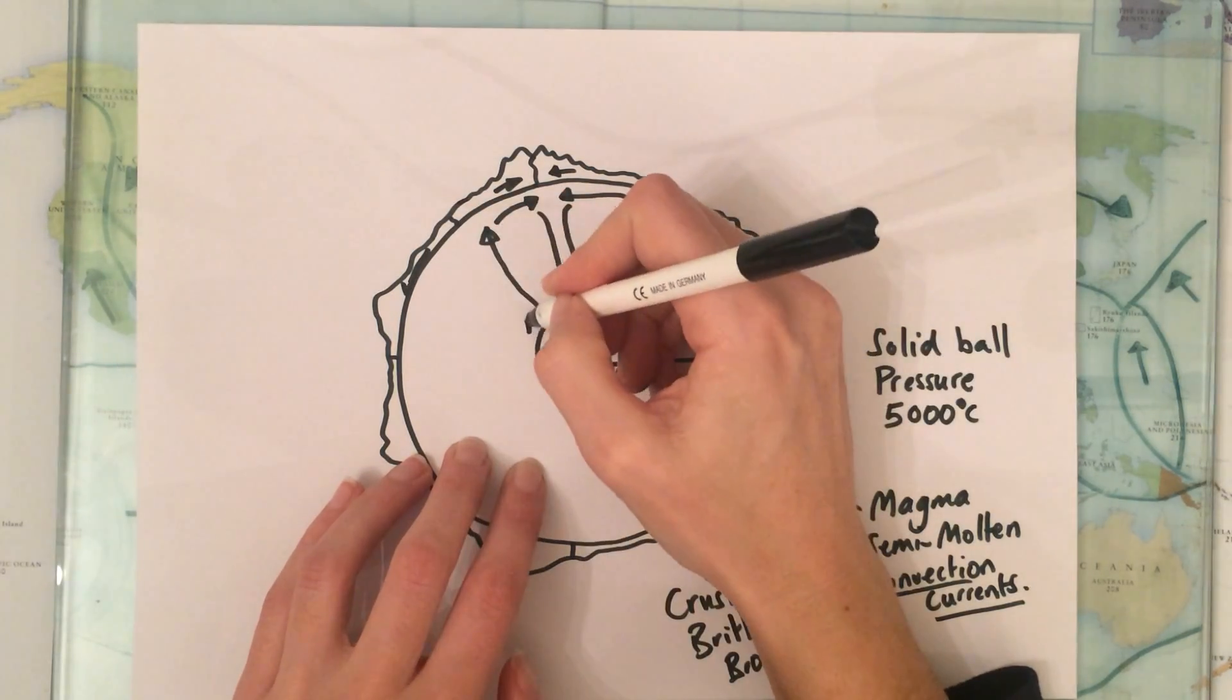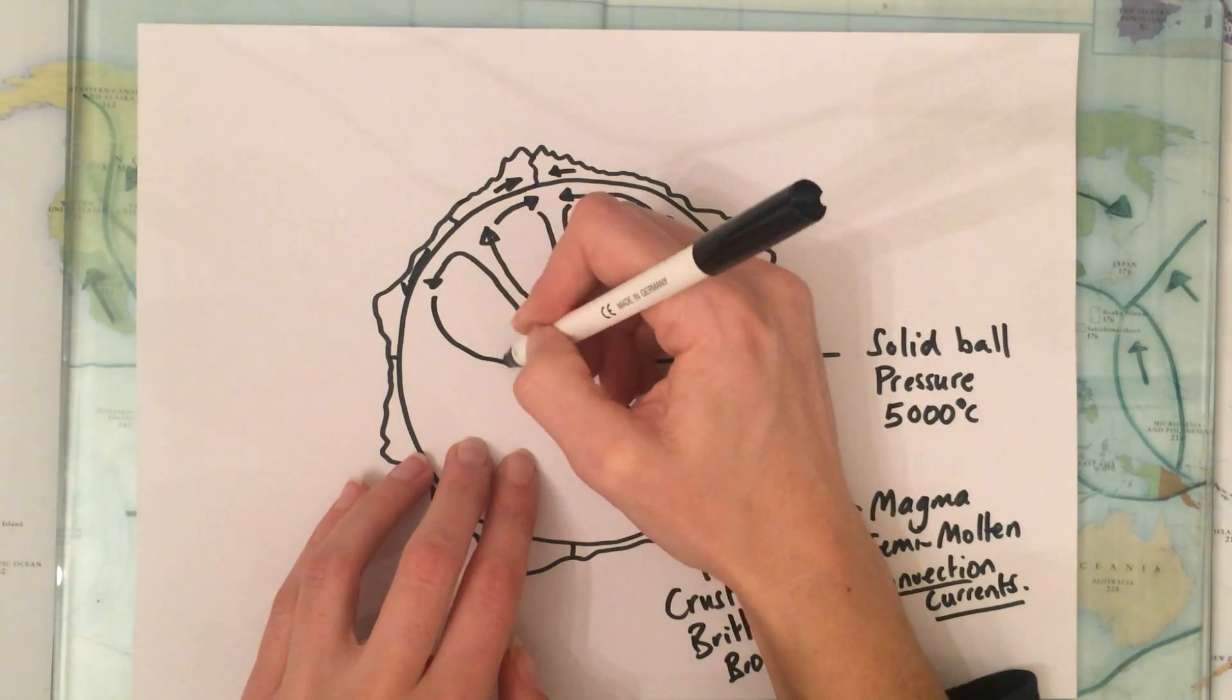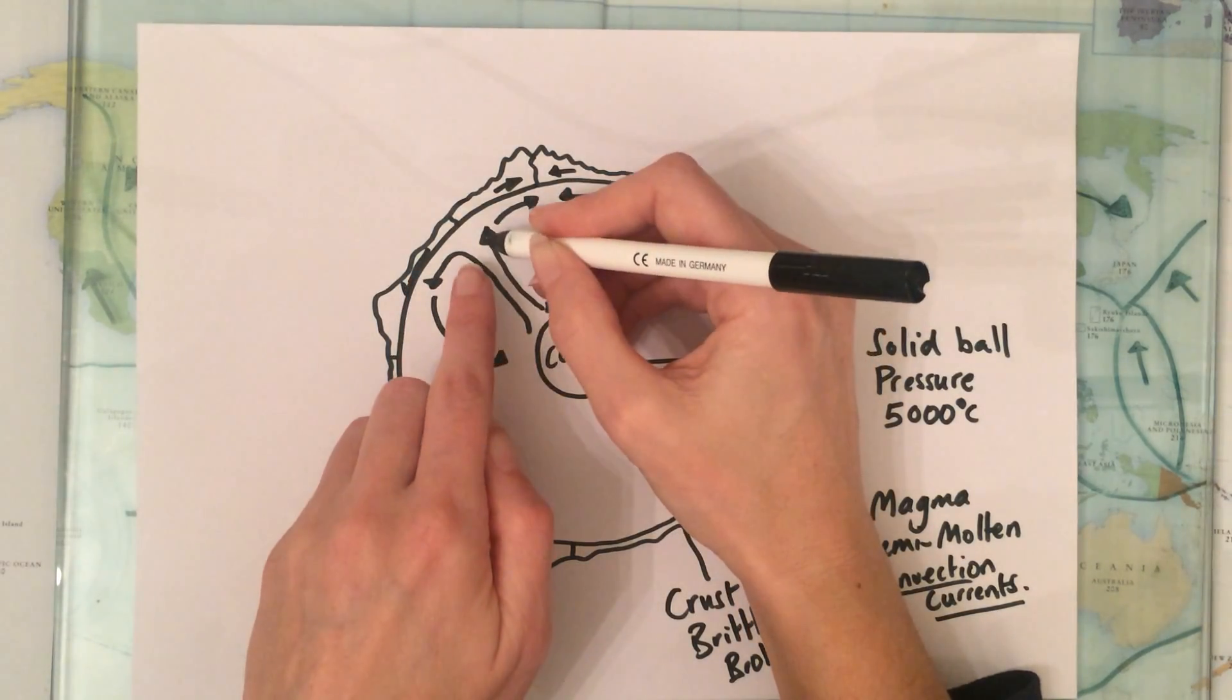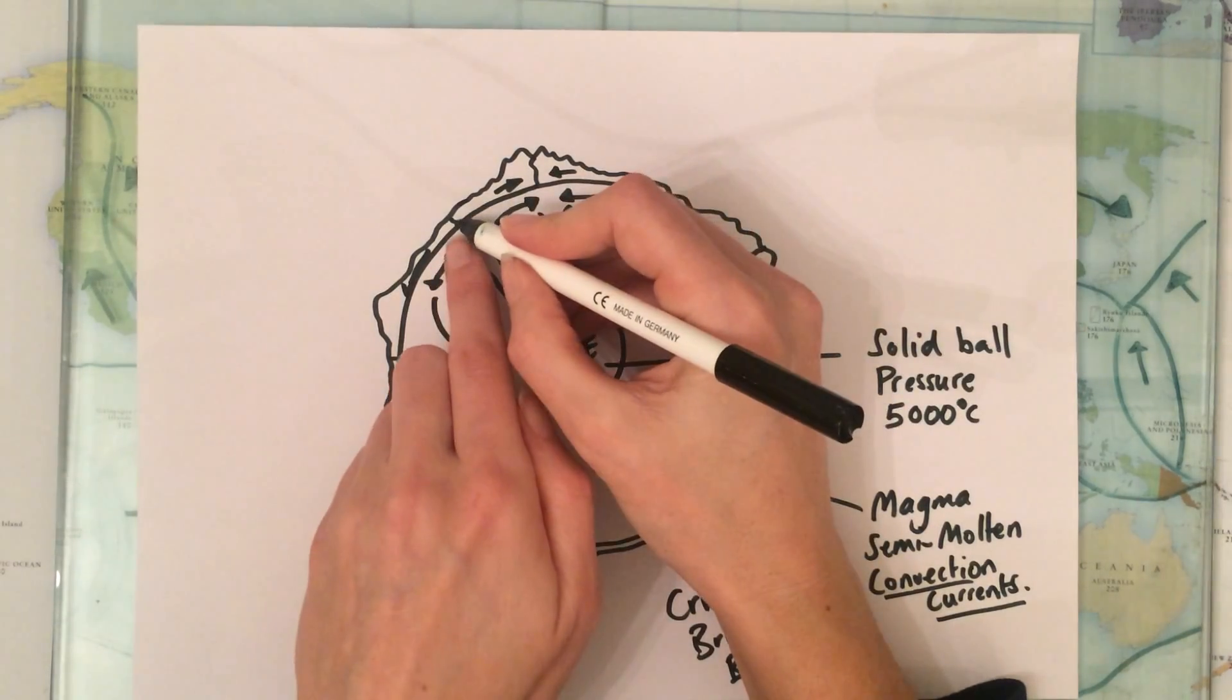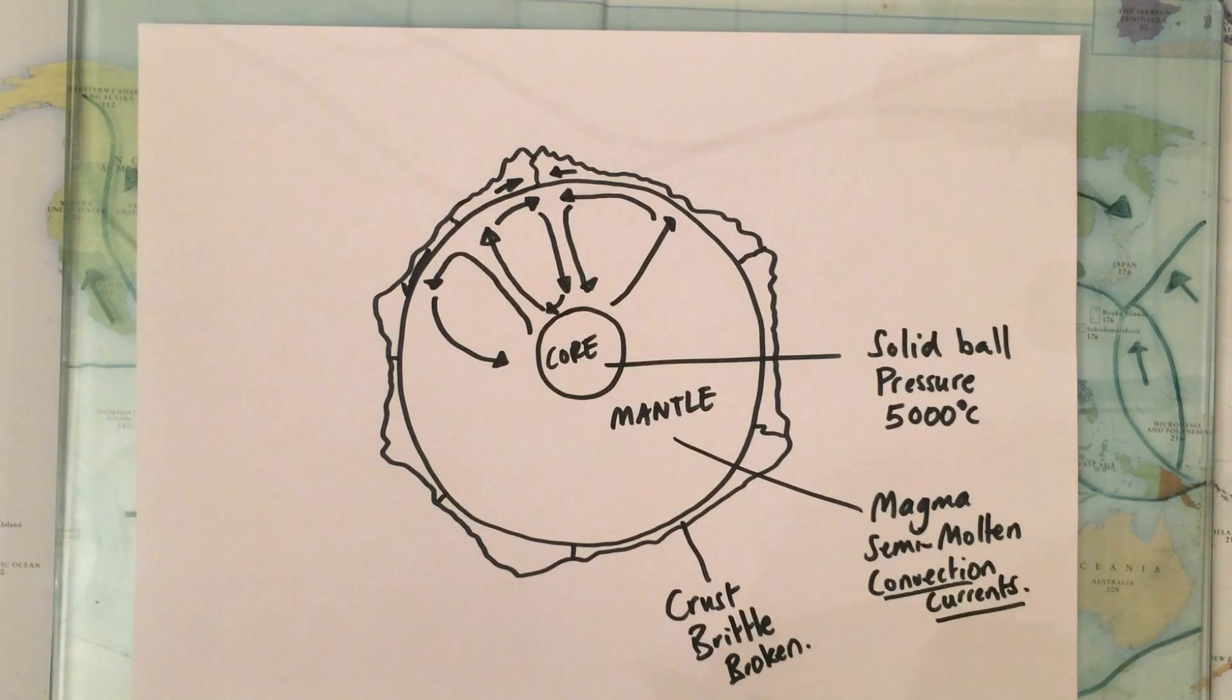Another example here is if our convection current here rises up and diverges, that means moves apart, so in this instance they are moving apart we would actually rip the tectonic plates away from one another.